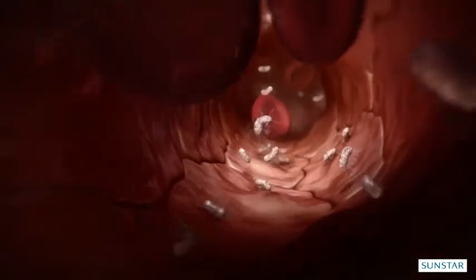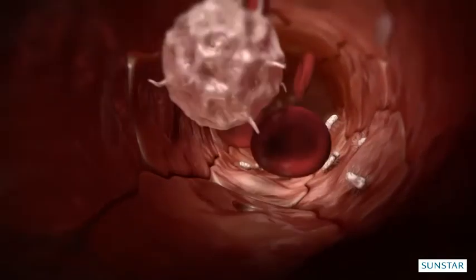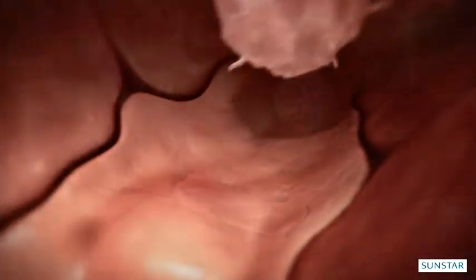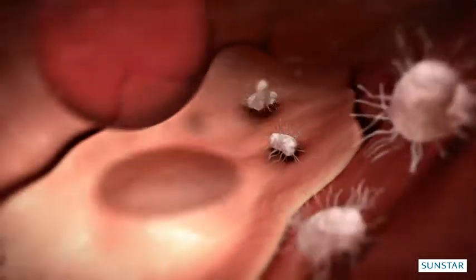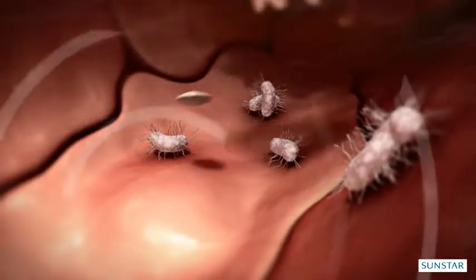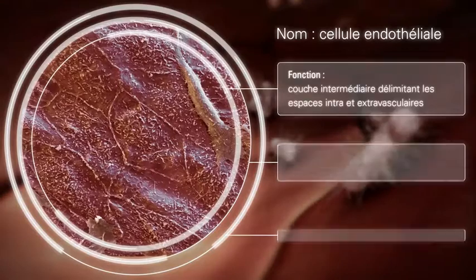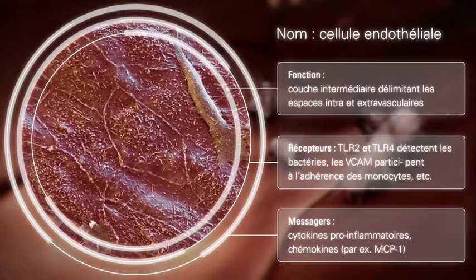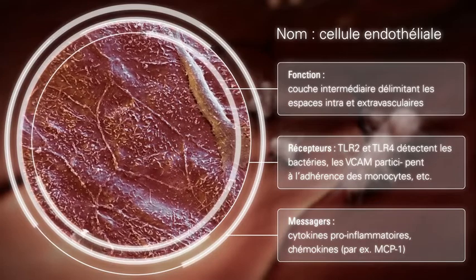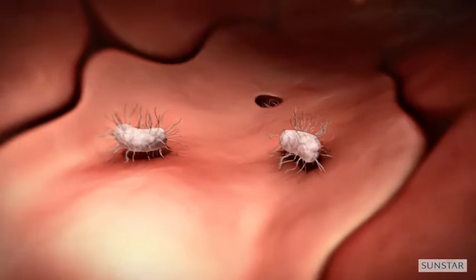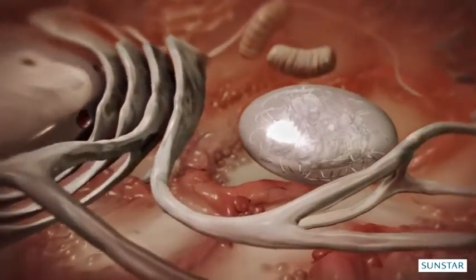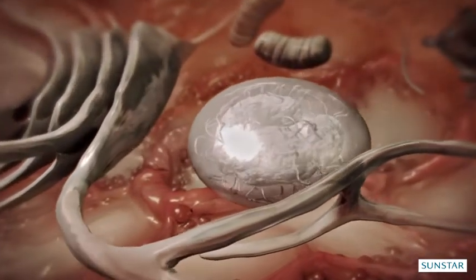Certaines bactéries, comme Porphyromonas gingivalis, possèdent des structures de surface spécialisées, appelées fimbriae, grâce auxquelles elles peuvent se fixer aux cellules endothéliales qui tapissent les vaisseaux sanguins et y pénétrer. Bien cachées à l'abri du système immunitaire, les bactéries survivent, persistent et se multiplient dans les cellules, infectant d'autres cellules endothéliales.